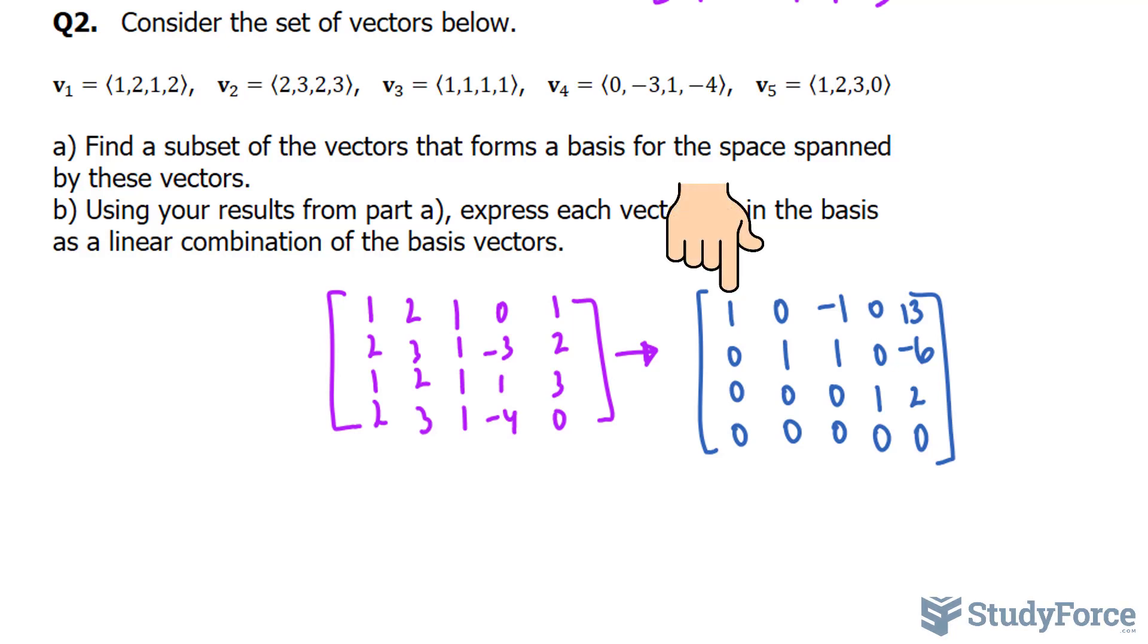And from here, you can see that vector 1, vector 2, and vector 4 form a basis for the space spanned by the five vectors. Notice the leading ones. That's vector 1, vector 2, and vector 4.